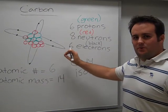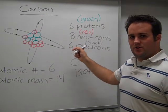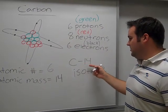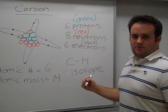This normal carbon atom, now that we added two neutrons to the nucleus, has now become carbon-14, or an isotope.